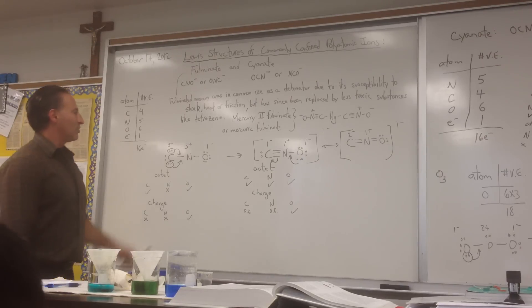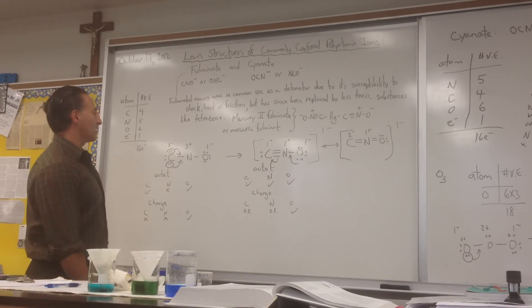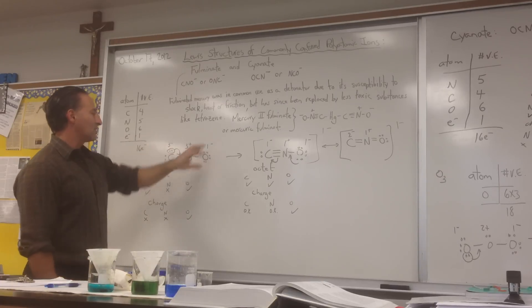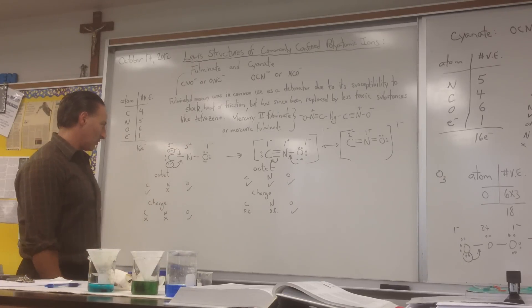We draw the atom with the nitrogen atom in the middle and a single bond to each one of the other atoms. That uses up 4 electrons, so we have to account for 12 more. And what we do is we put 6 on either one of the two atoms that are on the other side.